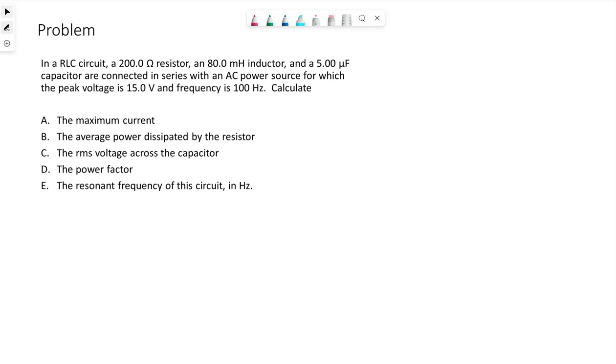We want to calculate the maximum current, the average power dissipated by the resistor, the RMS voltage across the capacitor, the power factor, and the resonant frequency of this circuit in hertz. We have R, L, C, maximum source voltage, and frequency.